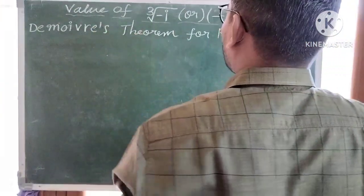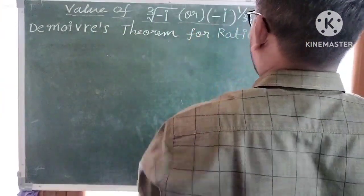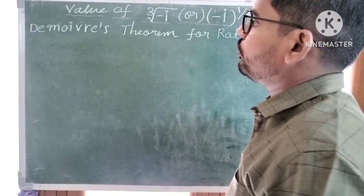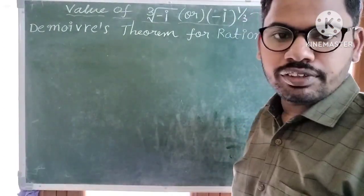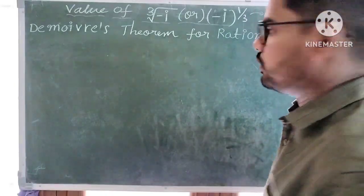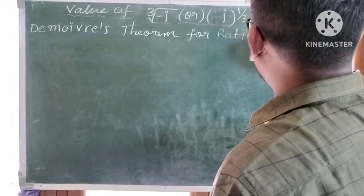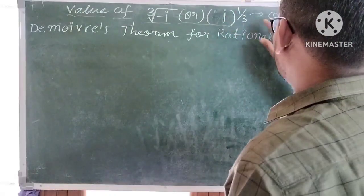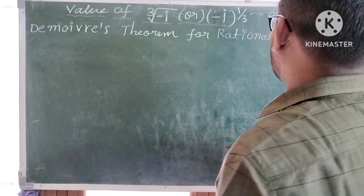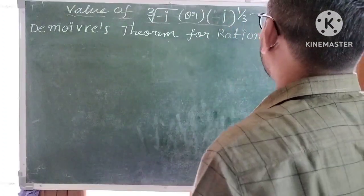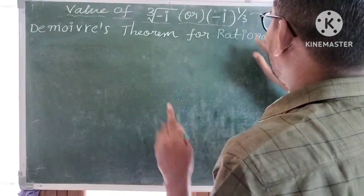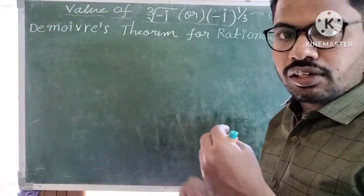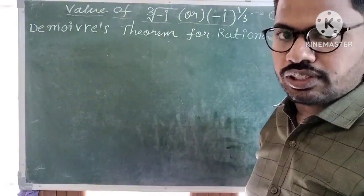Here we need to find the value of cube root of minus i, or minus i to the power 1 by 3. I am going to use De Moivre's theorem for rational index, because the power of this complex number is a rational number. The denominator tells us the number of solutions — here denominator is 3, so we get 3 solutions.